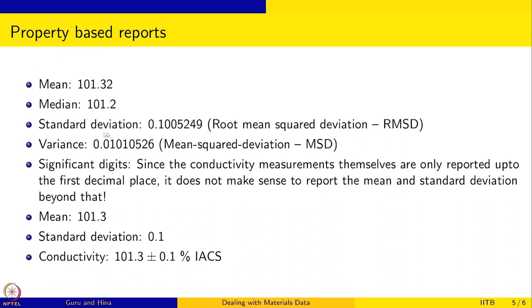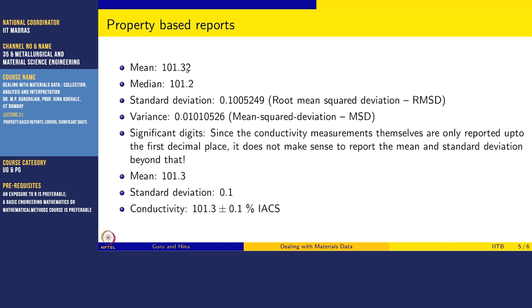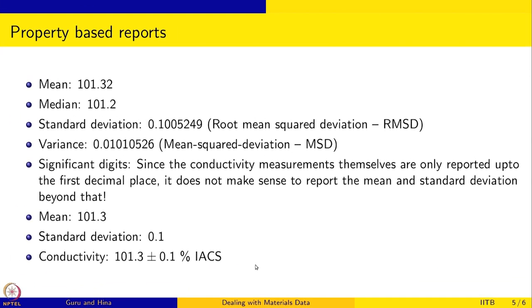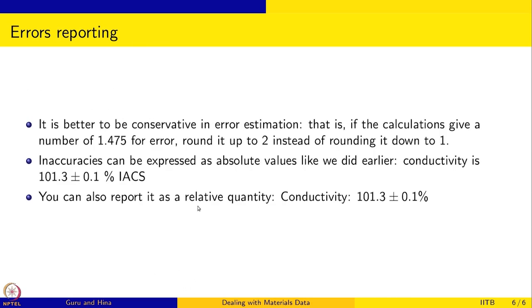And what we did is to calculate the mean, median, standard deviation and variance. And standard deviation is called root mean squared deviation or RMSD and variance is called mean squared deviation MSD. And because all the conductivity measurements are reported up to first decimal place, the mean and standard deviation also should be reported only up to this or less than this, it cannot be more than that. So mean is 101.3, standard deviation is 0.1. So the right way to report conductivity for this copper sample is 101.3 plus or minus 0.1 percentage IACS. And because we have seen that in the case of this conductivity data, the data seems to be a normal distribution, so giving mean and standard deviation is sufficient to completely describe the information.